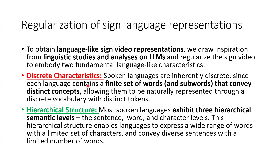The first characteristic is discrete characteristics. Spoken languages are entirely discrete — each language consists of a finite set of words and sub-words that convey distinct concepts, allowing them to be naturally represented through a discrete vocabulary with distinct tokens. The second is a hierarchical structure. Most spoken languages exhibit three hierarchical semantic levels: the sentence, word, and character levels. This hierarchical structure enables languages to express a wide range of words with unlimited sub-characters and convey diverse sentences with a limited number of words.